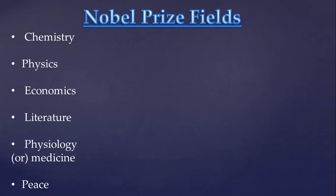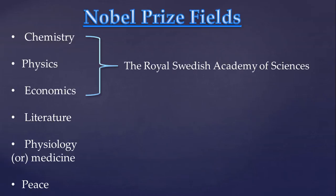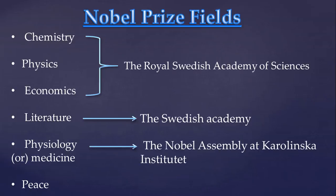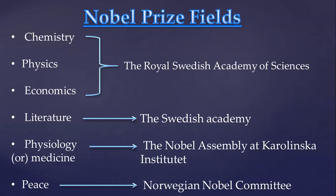There are different institutions which organize the different Nobel Prize categories. Chemistry, Physics and Economics are organized by the Royal Swedish Academy of Sciences. Literature is organized by the Swedish Academy. Physiology or Medicine is organized by the Nobel Assembly at Karolinska Institute. The Peace Prize is organized by the Norwegian Nobel Committee.